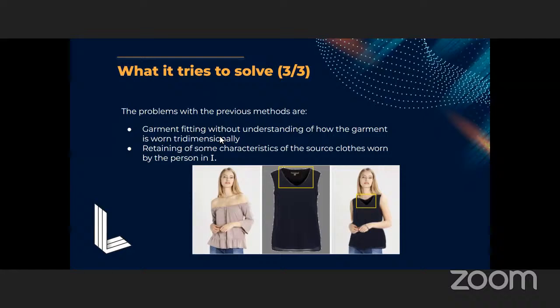There are some problems with previous methods that do virtual try-on. The first problem is garment fitting without understanding of how the garment is worn tridimensionally. In the generated image you can see the v-neck, but you can also see a black region which belongs to the back side of the garment — the process didn't understand the garment tridimensionally. The second problem is the retaining of some characteristics of the source clothes worn by the input person, which I'll cover later.